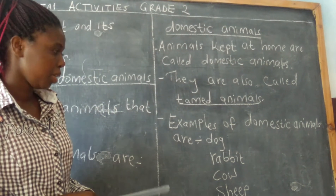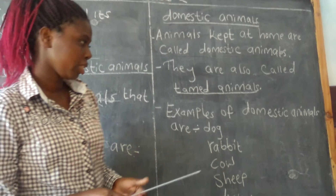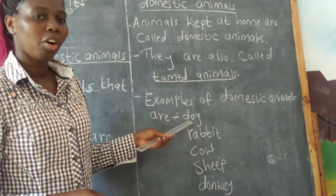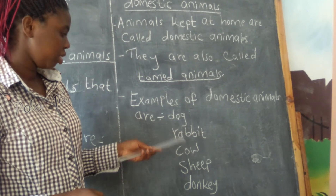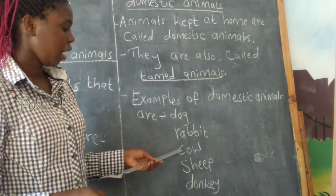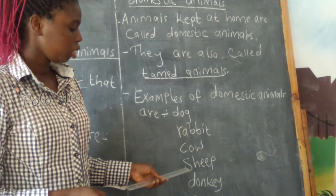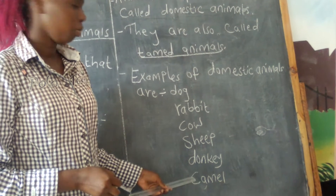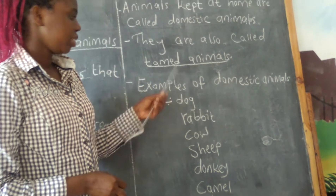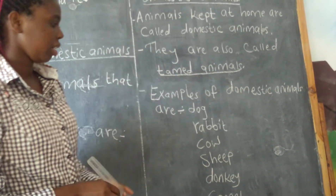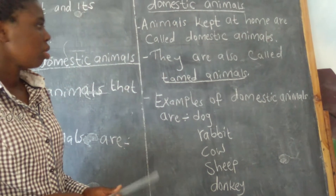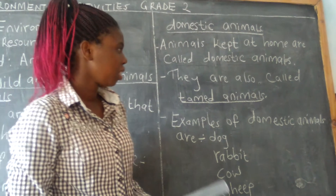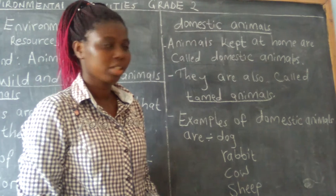Examples of domestic animals include dog, rabbit, cow, sheep, donkey, and camel. These are just the examples. We have very many domestic animals.